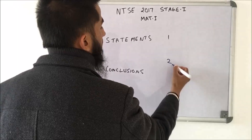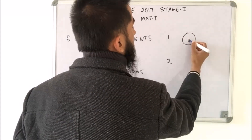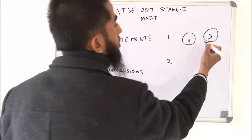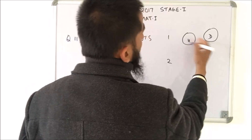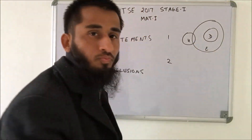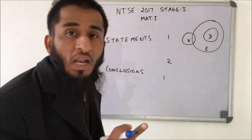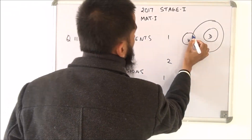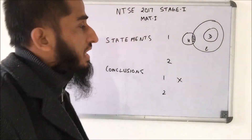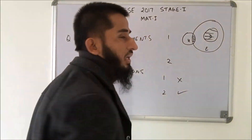In this question: no horse is a dog, so dog and horse have nothing in common. And all dogs are elephants, so dogs go within the set of elephants, but we can have some overlapping part in the general case. Conclusion one says no elephant is a horse — which is not true because we can have some overlapping part. Conclusion two says some elephants are dogs — which is true. So the second conclusion is correct.